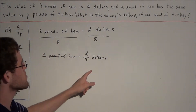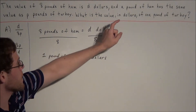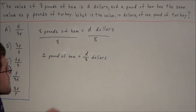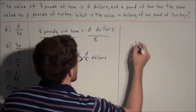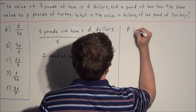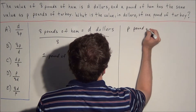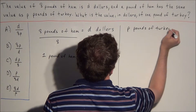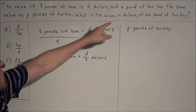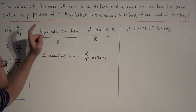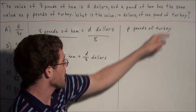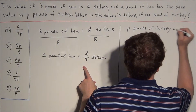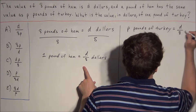Now we can use this to move to the next stage. A pound of ham has the same value as p pounds of turkey. So p pounds of turkey is the same price as 1 pound of ham, which is d over 8 dollars. Therefore, p pounds of turkey costs d over 8 dollars.